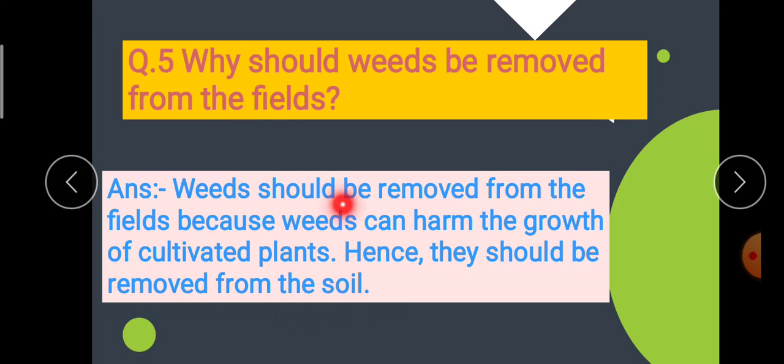कि जो weeds है, उसको हम fields में से इसलिए remove करते हैं. क्योंकि जो weeds है, वो, जो cultivated plants हैं, उनकी growth को क्या करती है? हार्म, ठीक है? इसलिए weeds को स्वाइल में से remove किया जाता है. ठीक है?